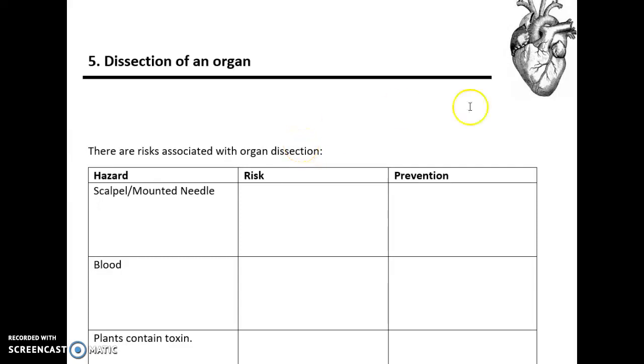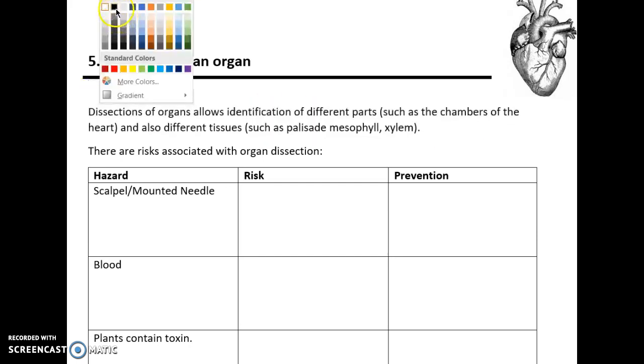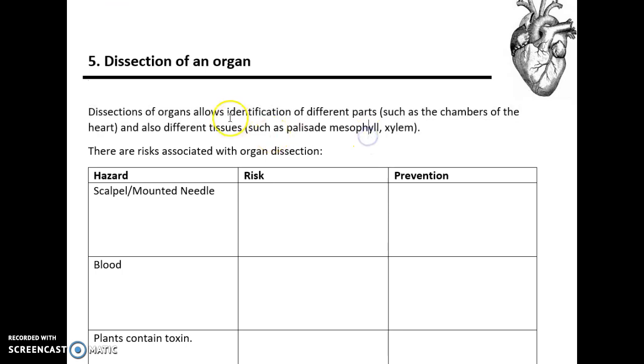Hello and welcome to Teaching Biotip, and we're going to look at the fifth required practical for AQA A-level biology, and that is the dissection of an organ.